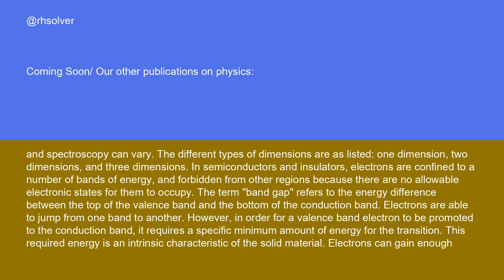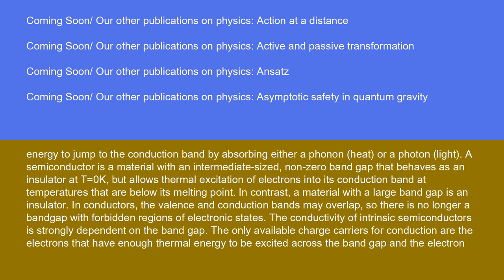In semiconductors and insulators, electrons are confined to a number of bands of energy and forbidden from other regions because there are no allowable electronic states for them to occupy. The term band gap refers to the energy difference between the top of the valence band and the bottom of the conduction band. Electrons are able to jump from one band to another. However, in order for a valence band electron to be promoted to the conduction band, it requires a specific minimum amount of energy for the transition. This required energy is an intrinsic characteristic of the solid material. Electrons can gain enough energy to jump to the conduction band by absorbing either a phonon (heat) or a photon (light).